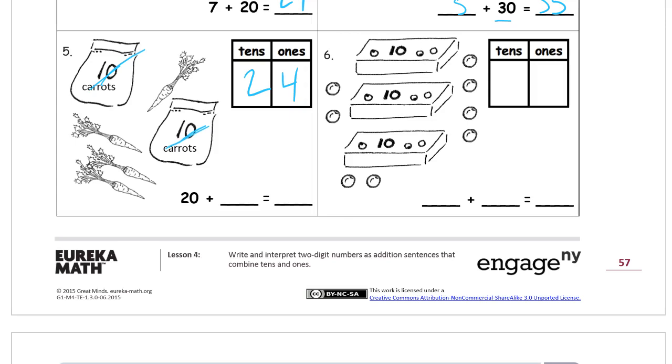I notice this one's a little bit tricky because you've got a two in the place value chart and a twenty in the equation here. But that two is two tens, so that's twenty. And the four is the four ones for twenty-four.